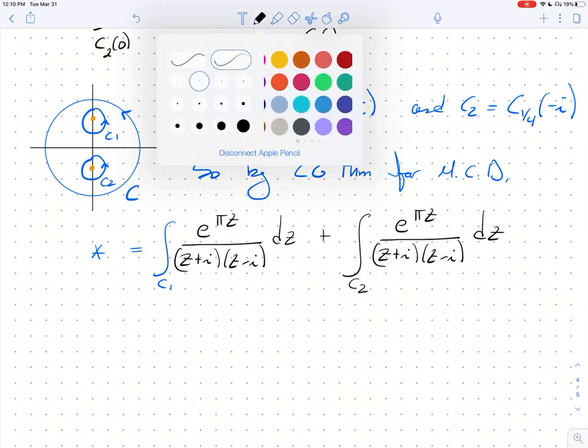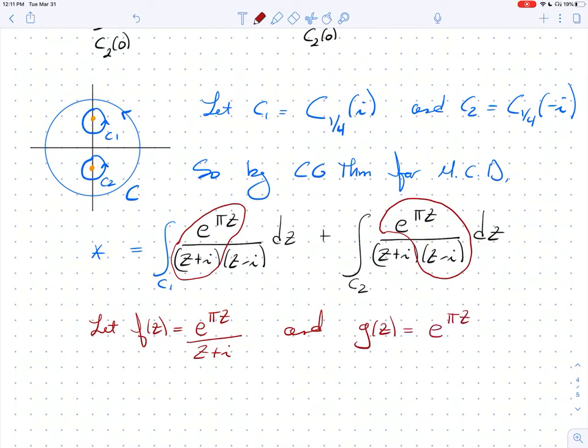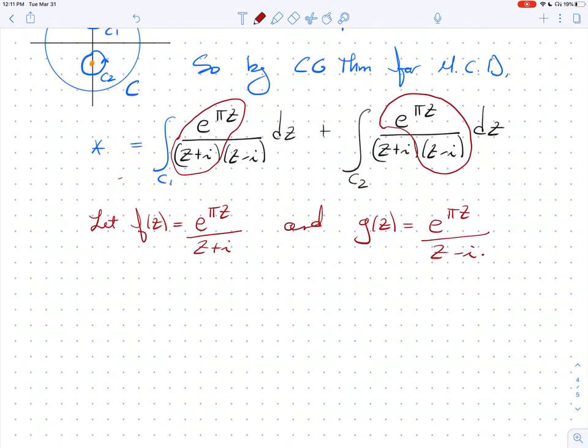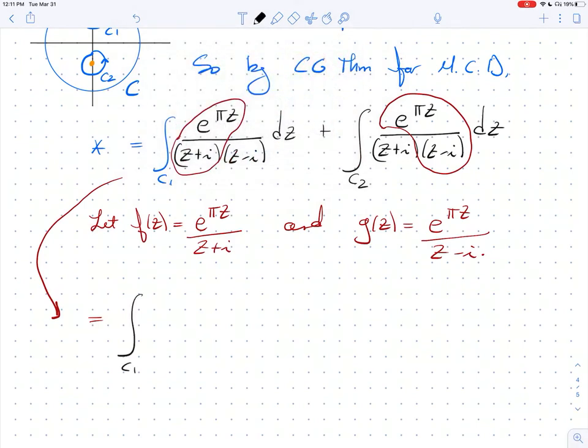So, let's work it out. So, for this one, let me use a different color. Let's do, I don't know, let's do this one. So, for the first one, we're on C1, the problem is at i. So, this is going to be my f. For the second one, the problem is at minus i. So, this is going to be my, I don't know, we'll call it g. And so, we can work it out. So, let's think about, let's go ahead and write this down. Let's let f of z equals e to the πz over z plus i. And we'll let g of z equals e to the πz over z minus i. Okay? So, then we'll just put an arrow down here. And this is now equal to, I should switch back to black. This is equal to the integral over C1 of f of z over z minus i dz plus the integral over C2 of g of z over z plus i dz.